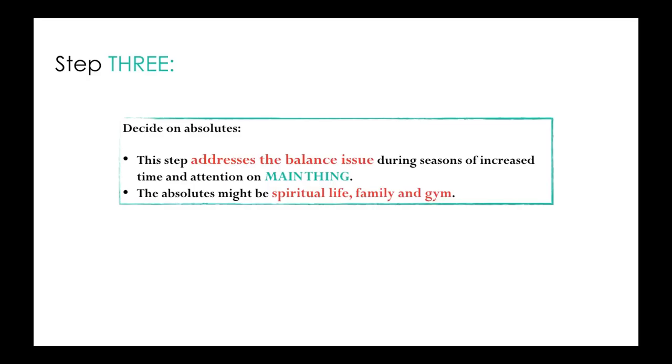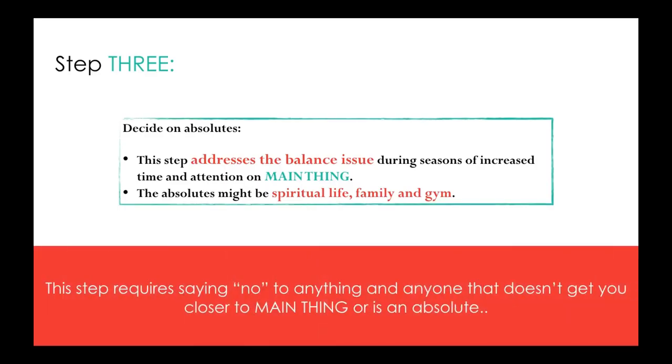And then step three, the final step is decide on the absolutes. This goes along with the balance's bunk-focused area. So, this step addresses the balance issue during seasons of increased time and attention to your main thing. These absolutes might be your spiritual life, family time, gym, whatever it is. For me, my spiritual life, hanging out with my husband, and going to the gym are extremely important to me. So, this step requires saying no to anything or anyone that doesn't get you closer to the main thing or is not an absolute.